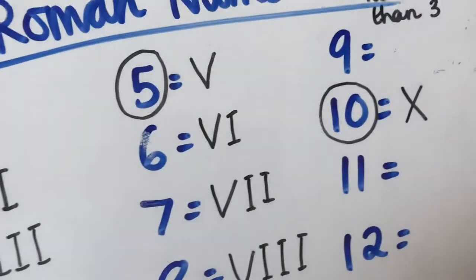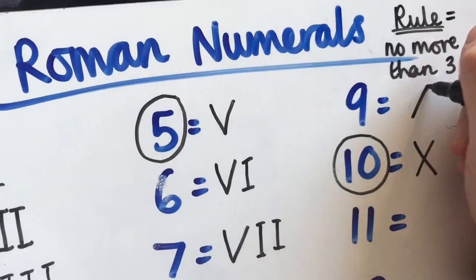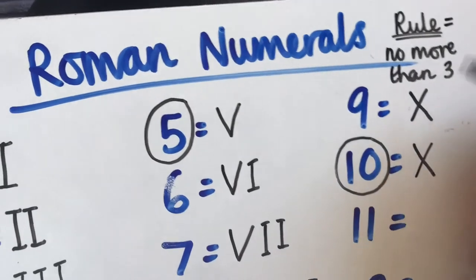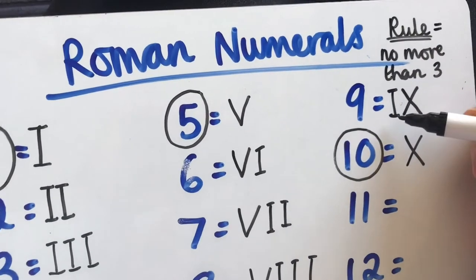With our number 9, if you have a look at 10, we've got X. So for number 9, we're going to have one before 10, one before 10 would be I-X.